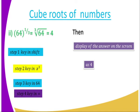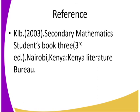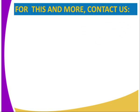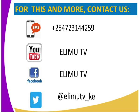This is the activity for today. You are required to evaluate using the calculator: the square root of 693 times 31 divided by 44,670; and the next one, the number in bracket 536 divided by 437 times 620, raised to power 3. For more information, you can get it from the KLB 2003 Secondary Mathematics Students Book 3, third edition. You can also contact us through SMS, YouTube, Facebook, or Twitter. Stay tuned to RIM TV. Bye.